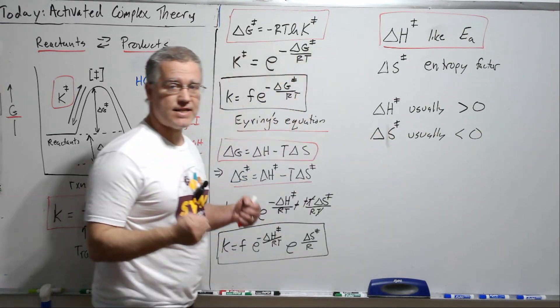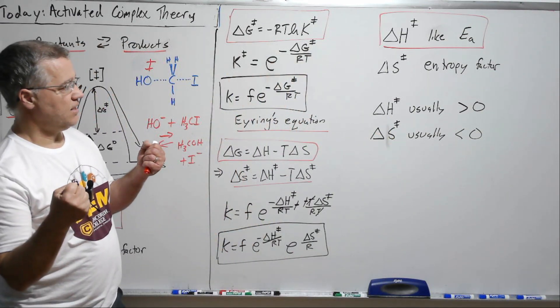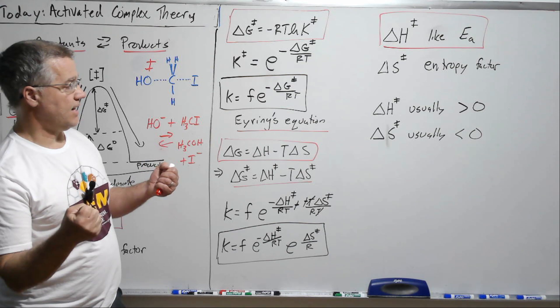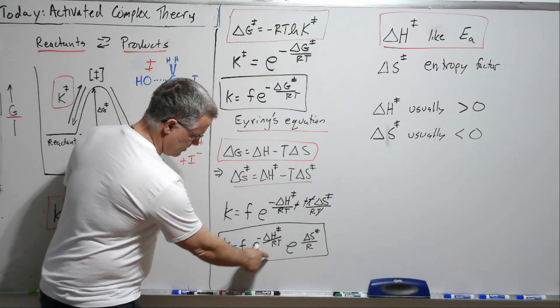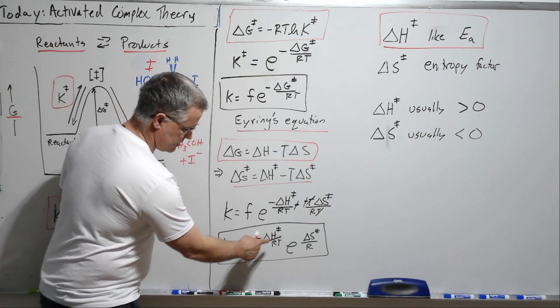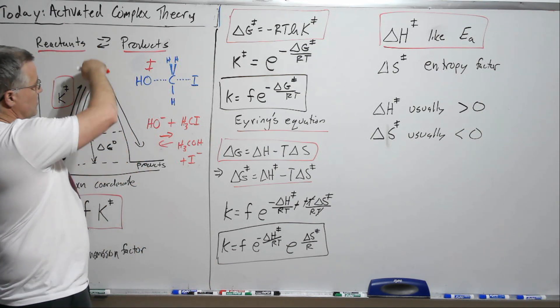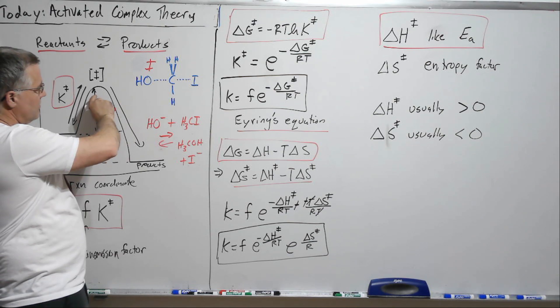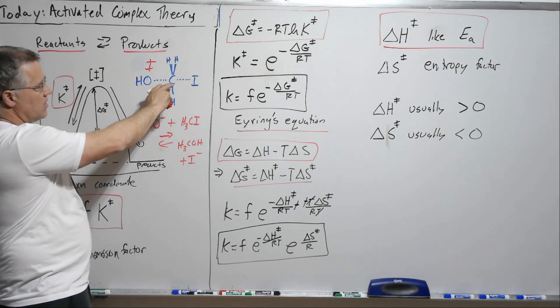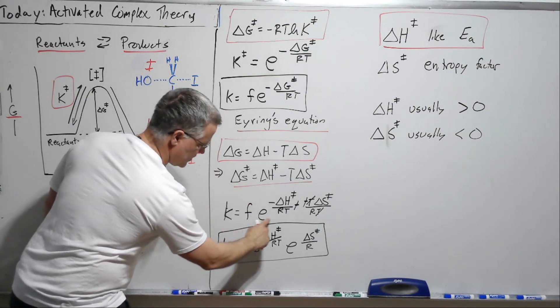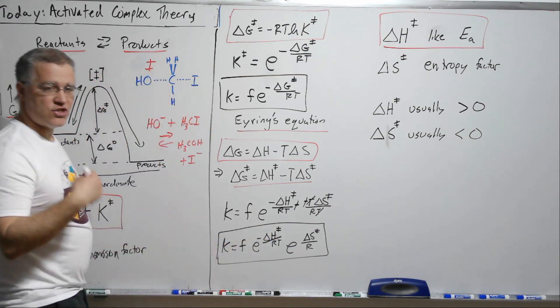So we expect delta H to be usually positive. So that will be unfavorable here. And so that will slow a reaction. So the bigger the delta H, not quite, but essentially the higher, well the bigger the delta H the more this term is diminished, the slower the rate.